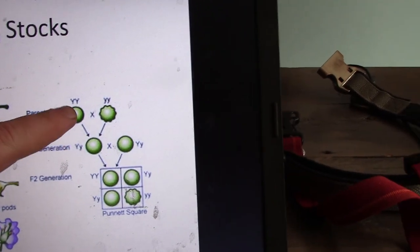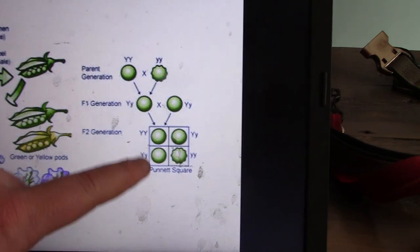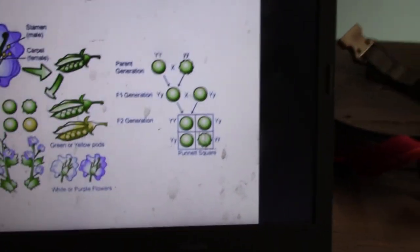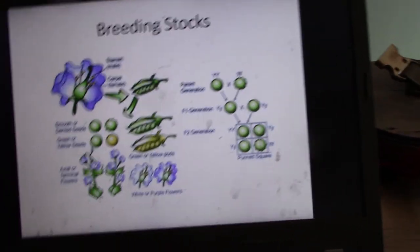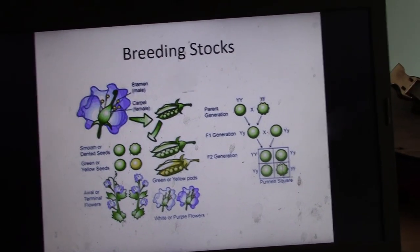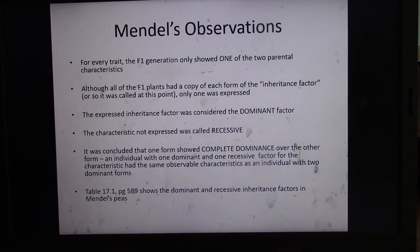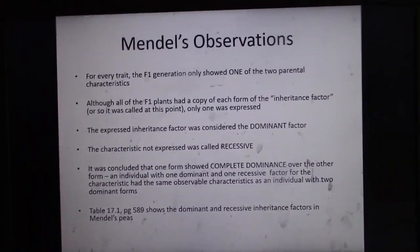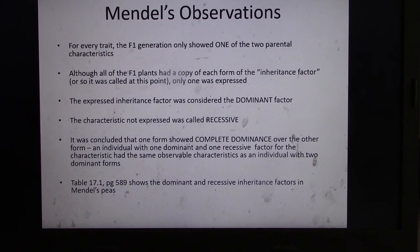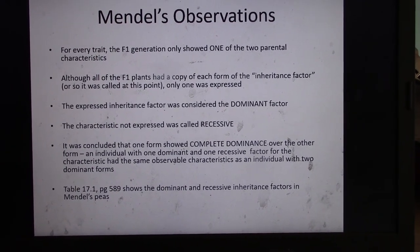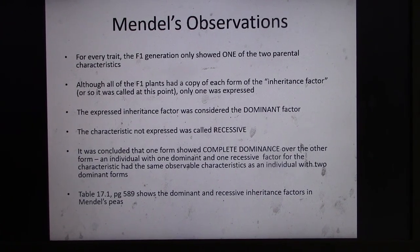Mendel repeated this over and over to give us our laws of inheritance. It was landmark work showing that you need a large body of data to determine trends in science. What Mendel observed was that for every trait, the F1 generation showed only one of the two parental characteristics. Although all F1 plants had a copy of each inheritance factor — which we now call genes — the one expressed he called dominant, and the unexpressed one recessive.